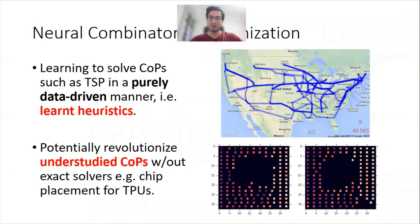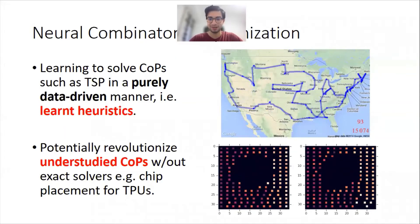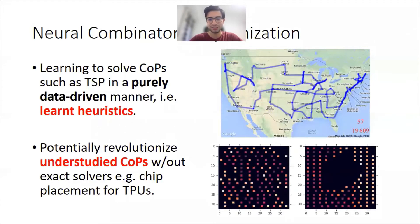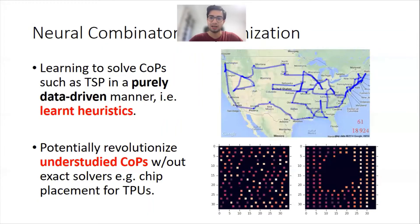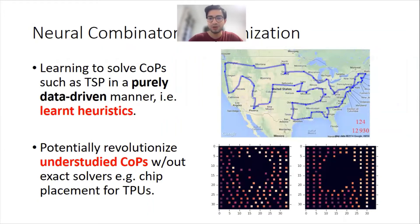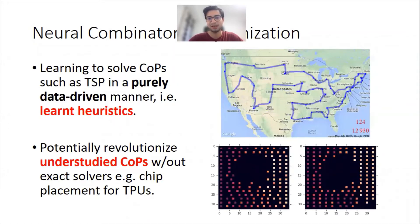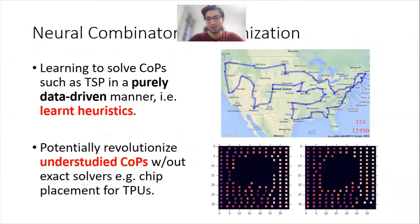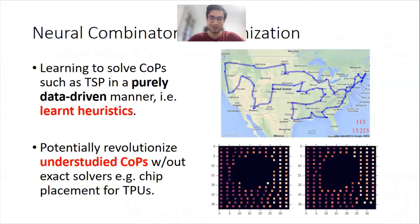This work is about neural combinatorial optimization, where we're trying to learn combinatorial problems in a purely data-driven manner. The motivation is to learn better heuristics for potentially understudied combinatorial problems, especially for those which maybe we don't have an exact solver. A good example is Google's recent TPU chip placement optimization approach, which is actually using reinforcement learning to do so.